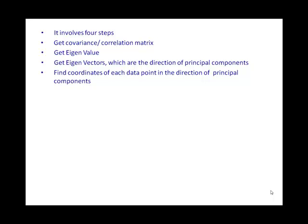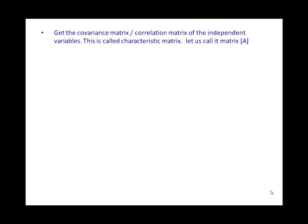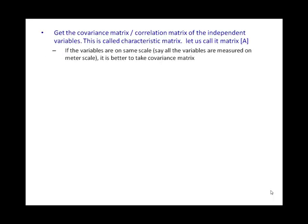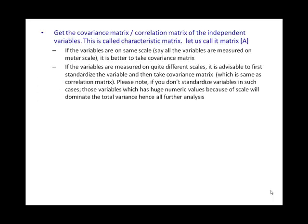The first step is to get the covariance matrix or correlation matrix of the independent variables — this is called the characteristic matrix, let's call it matrix A. If all the variables are measured on the same scale, it is better to take the covariance matrix. If the variables are measured on different scales, we should take the correlation matrix, or first standardize all the variables and then take the covariance matrix.